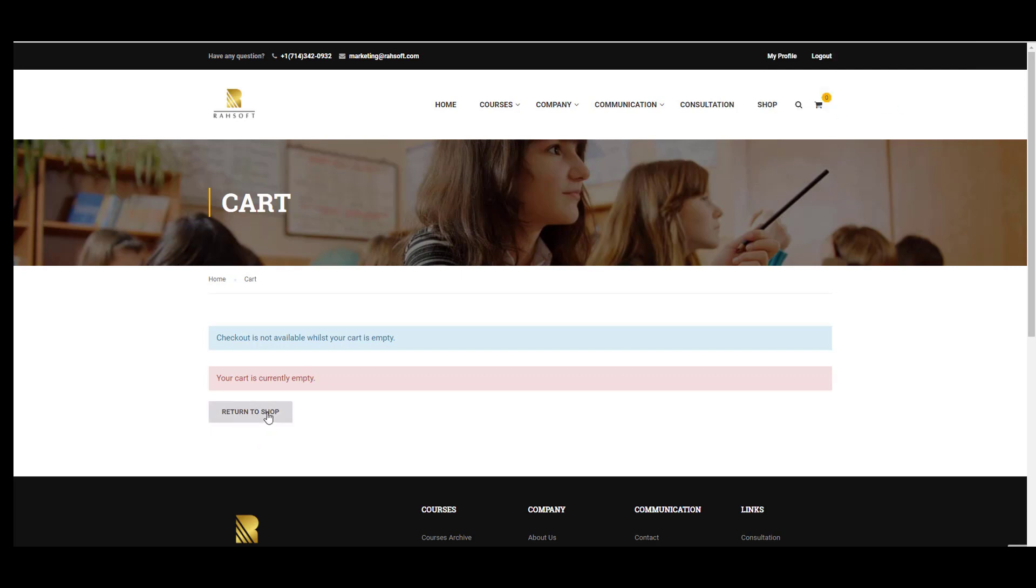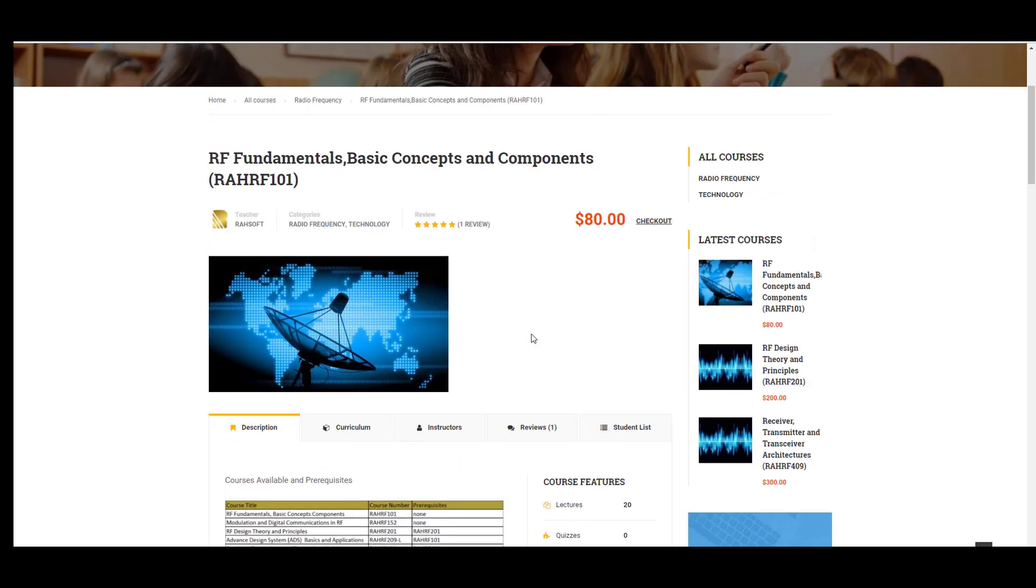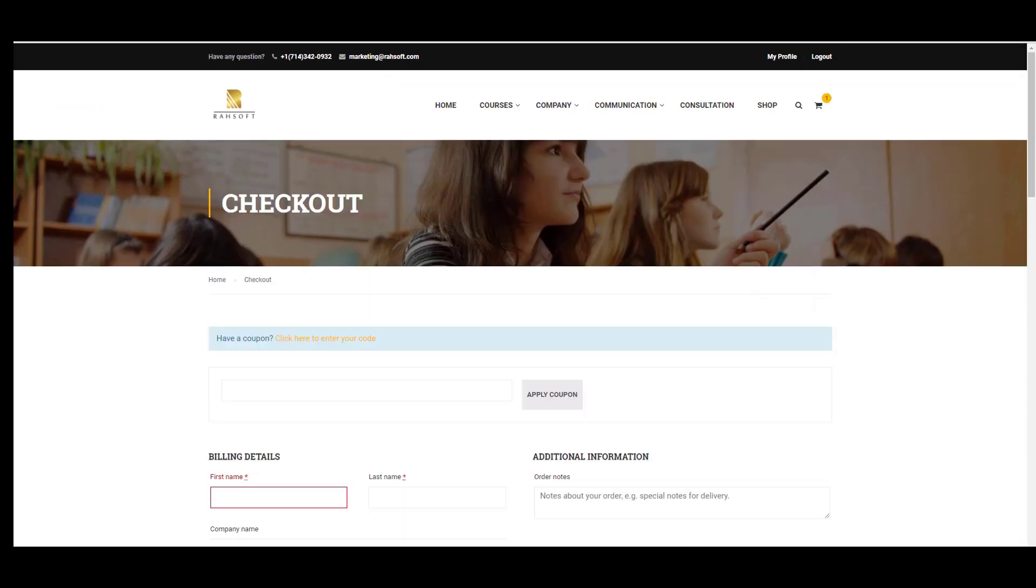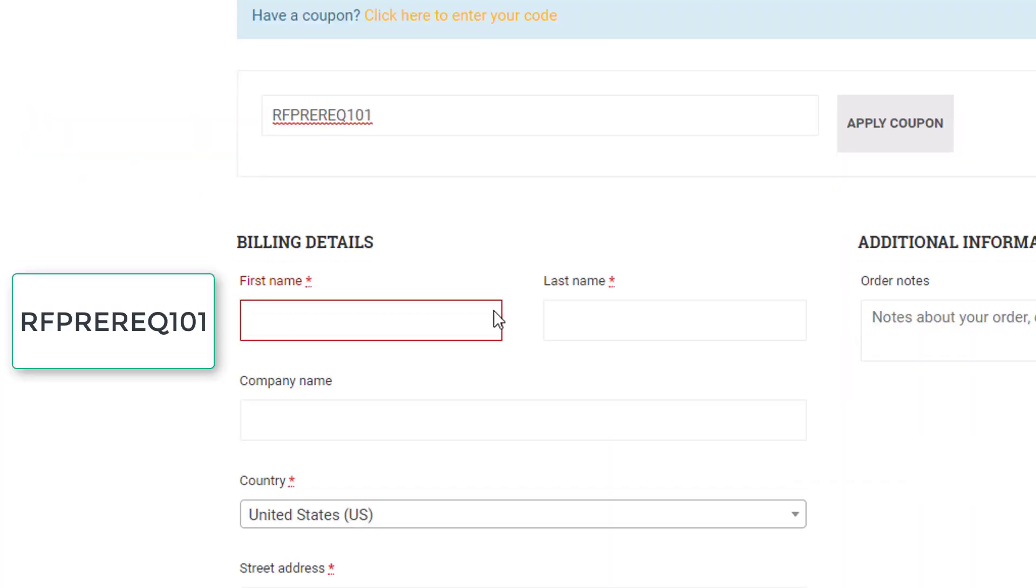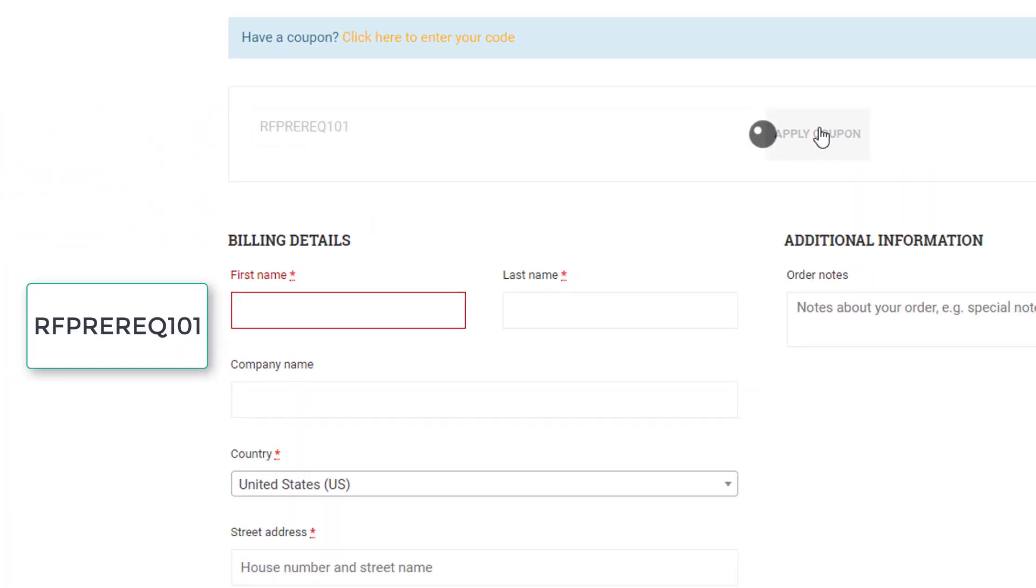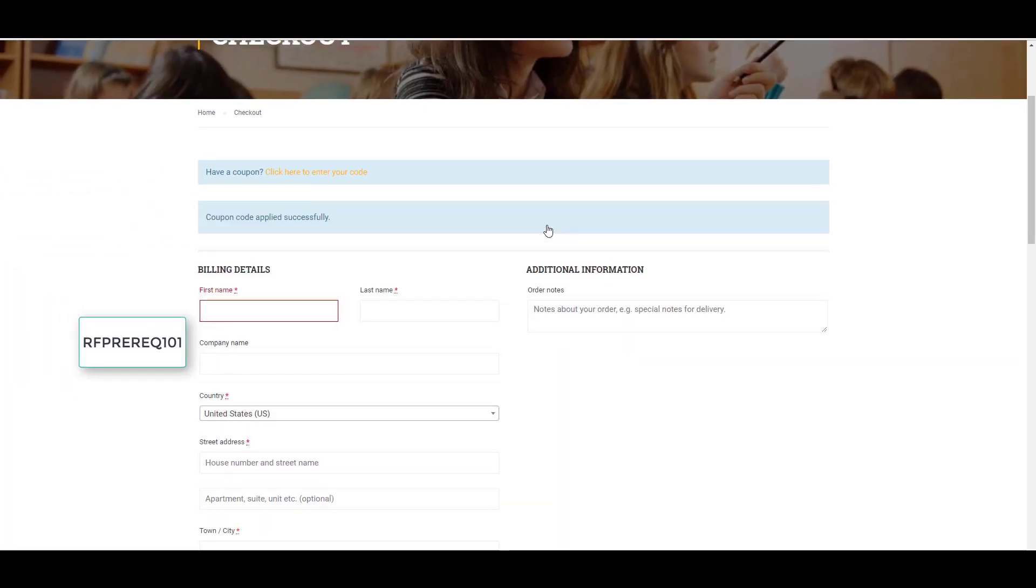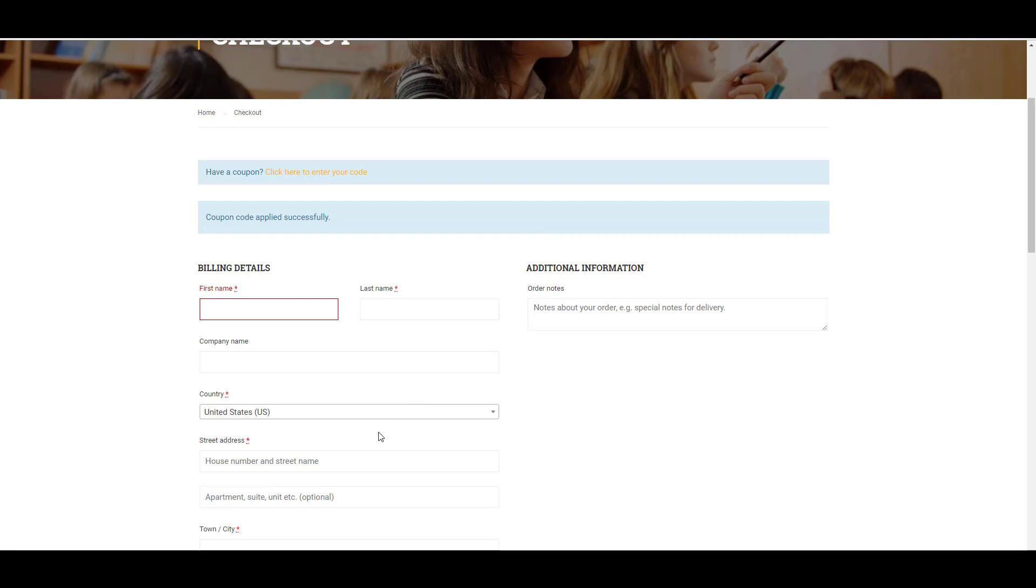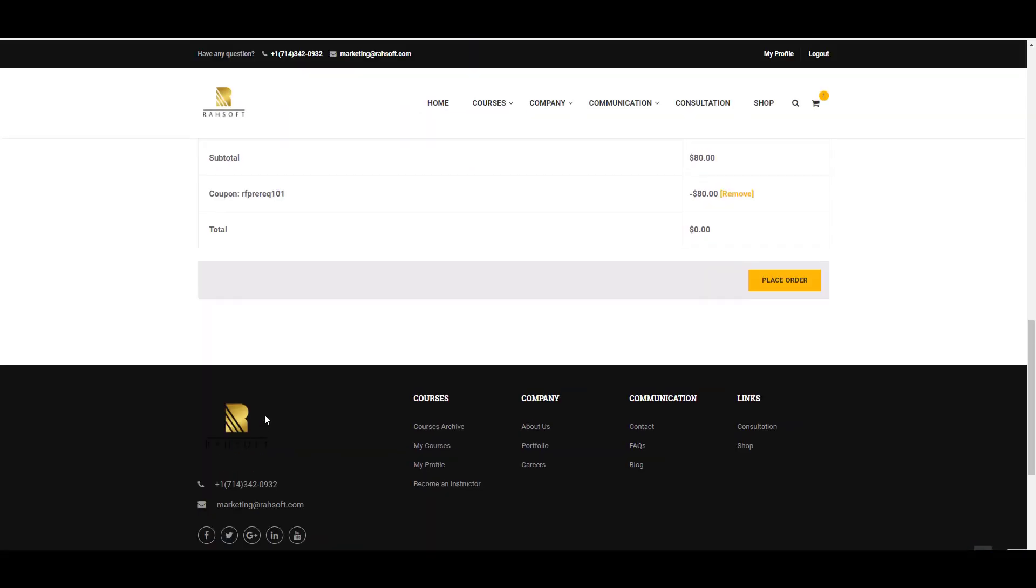Then after that, all you need to do is going to the course landing page and go to checkout. As you see, click to enter your code. You can put the coupon code here and then apply the coupon. Then you will have this course for free and you can take this course. As you see, you won't pay anything for this course.